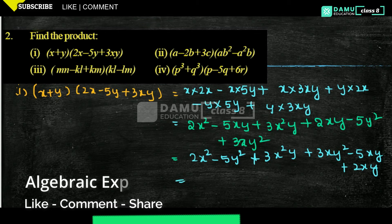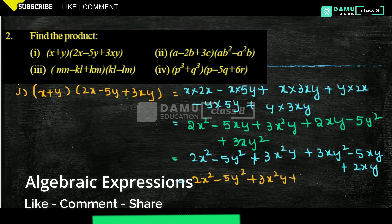So you can repeat the step as: 2x squared minus 5y squared plus 3x²y plus 3xy squared. Then minus 5 plus 2 — that is a subtraction, minus symbol, because 5 is the bigger number and the minus is before it. So minus 3xy — that is the answer.